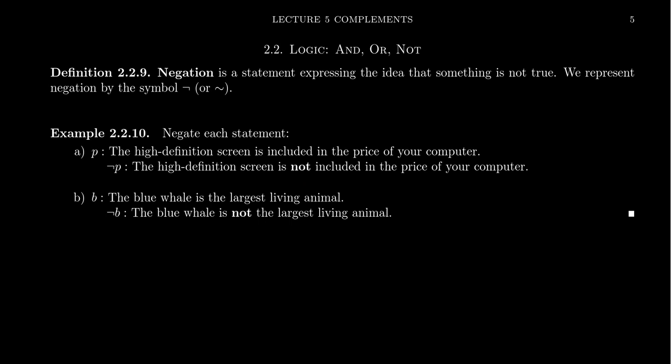That's what it means to negate things. Here's another statement, B: the blue whale is the largest living animal. That's a true or false statement — I think it's true. I'm certainly not a marine biologist, but I'm pretty sure the blue whale is the largest animal out there. Not B would mean that the blue whale is not the largest living animal. Negation just switches by adding the word 'not' in there.